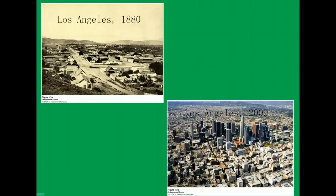Here's an example of urban sprawl. LA in 1880 had about 6,000 people. By 2009, almost 4 million people live in the center of LA, and when you include the metropolitan area and suburbs, it's around 13 million. My brother lives there. The traffic is ridiculous.